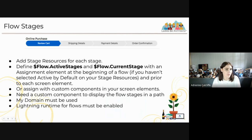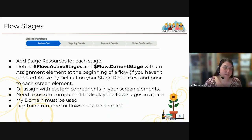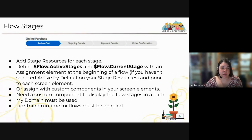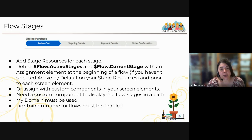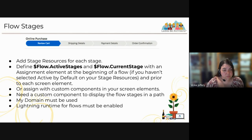Flow Stages allows us to put the screens of a screen flow into stages. You add Stage resources for each stage, define flow.active_stages and flow.current_stage with an assignment element at the beginning of your flow. If you haven't selected 'active by default' on the stage resource, they won't populate. You can also assign stages with a custom component in your screen element. You need a custom component to display the flow stages as a path graphic at the top — downloadable from AppExchange. You must have My Domain enabled and Lightning Runtime for Flows enabled.